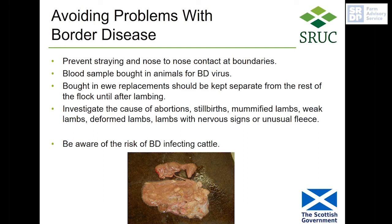To avoid problems with border disease, go back to basics on biosecurity — prevent straying and nose-to-nose contact. There is a good blood test for border disease virus so you can blood sample bought-in animals. If that's too expensive, it is certainly worthwhile keeping new replacements separate from the rest of the flock until after lambing, so that if any issues arise you can investigate and protect the rest of the flock. You should be investigating the cause of abortions, stillbirths, mummified lambs, weak lambs, deformed lambs, lambs with nervous signs, or unusual fleeces.